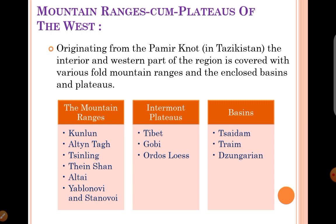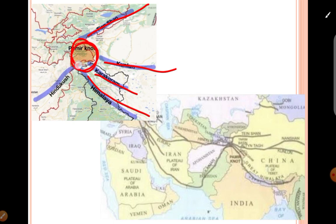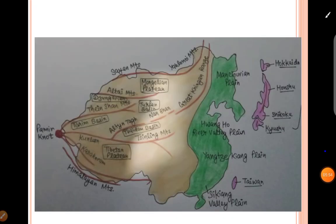These mountain ranges are mostly palmer knots. They originate in Tajikistan. From there, different mountain ranges go in different directions. The Pamir Knot is also a plateau. It is called a knot because it is a region where many mountain ranges converge and diverge. From the western north, these mountain ranges come from the Pamir Knot.